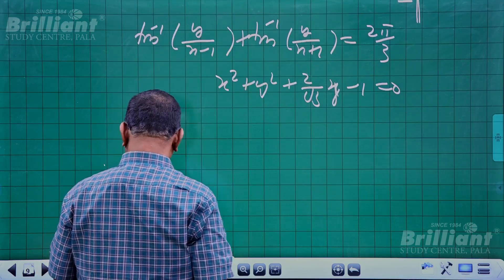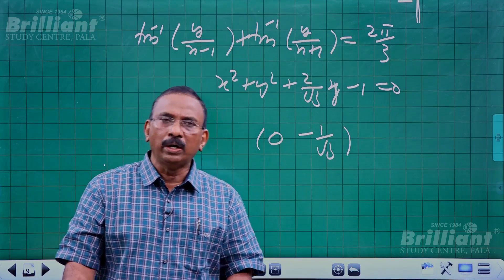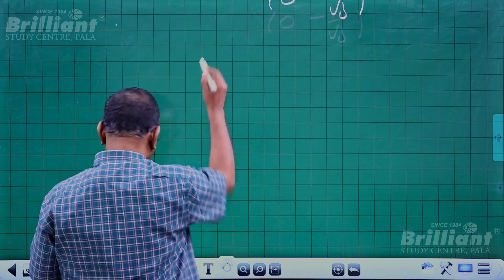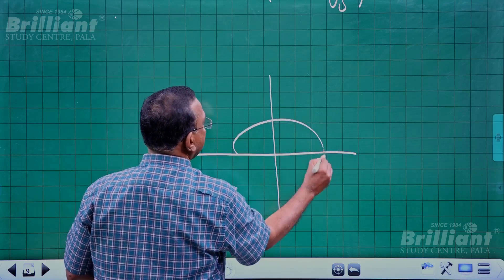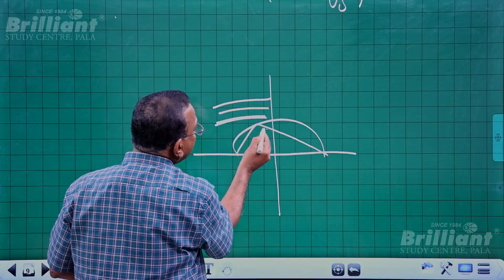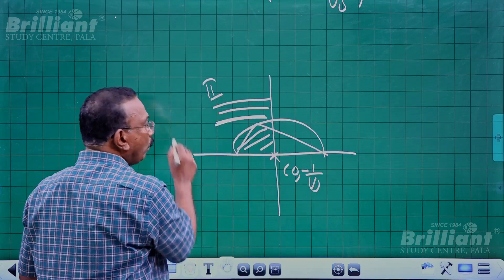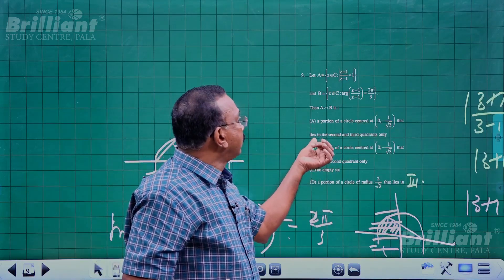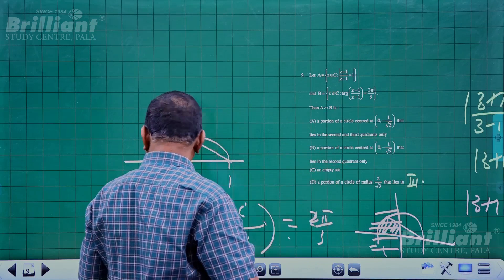Both options share the same center, so we identify the region directly. The arc subtends 120° and the region is on the left side of the y-axis. The required region R is a portion of the circle centered at (0, -1/√3) lying in the second quadrant only. Option B is correct.